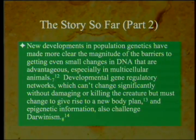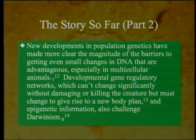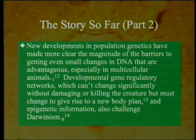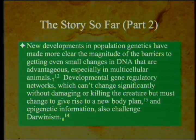Newer developments in population genetics have made clearer the magnitude of the barriers to getting even small advantageous changes in DNA, especially in multicellular animals. Developmental gene regulatory networks can't change significantly without damaging or killing the creature, but must change to give rise to a new body plan. And epigenetic information, which is not derived directly from the genome, also challenges Darwinism.